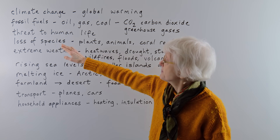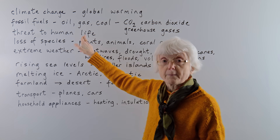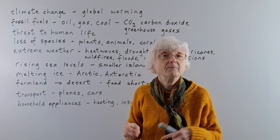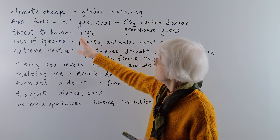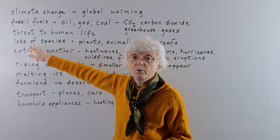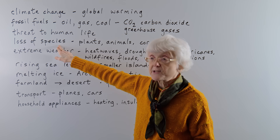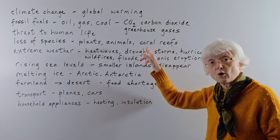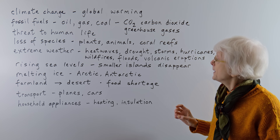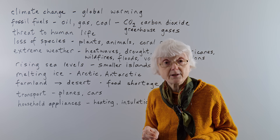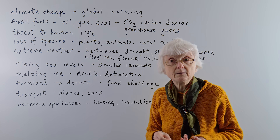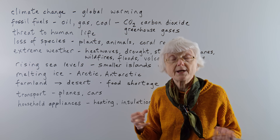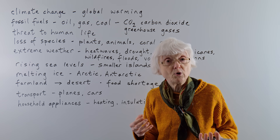All of this is described as a threat to human life, meaning human life is in danger because of all this climate change which is going on. And not just to human life, but also the loss of species, which can be plants, animals, or things like the coral reefs under the sea. A lot of those different species are becoming extinct. Coral reefs are sort of disappearing — all these things that we're losing, it's not a good thing for the environment.